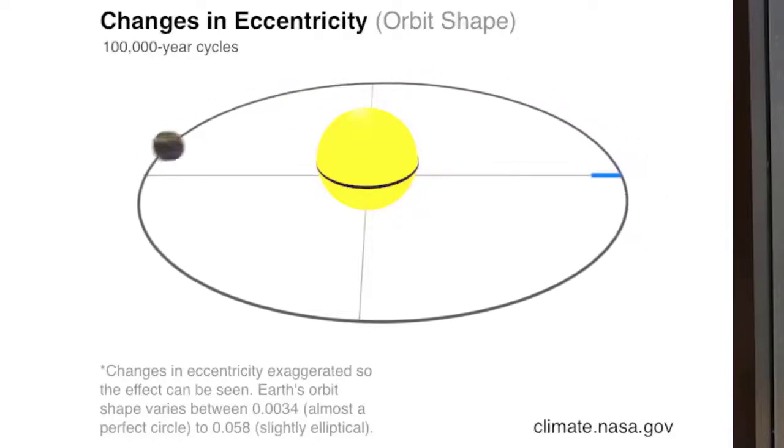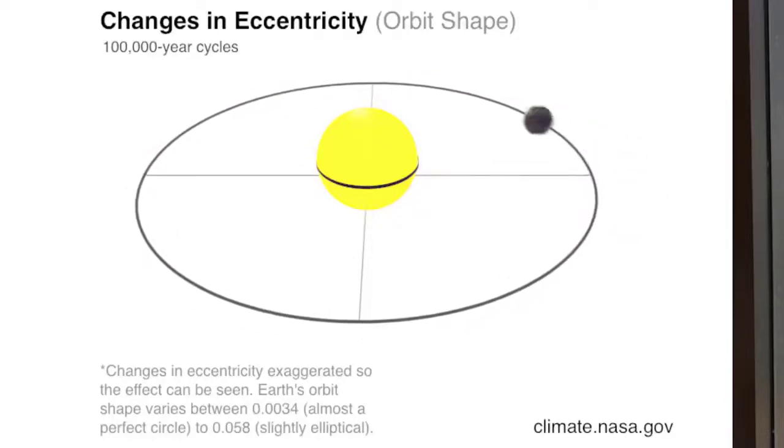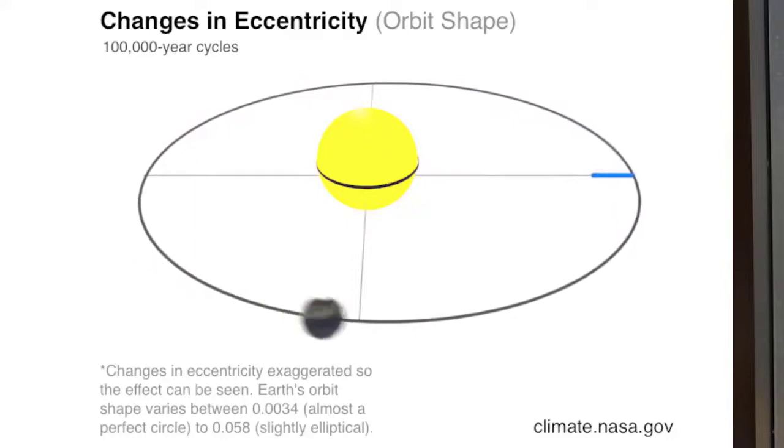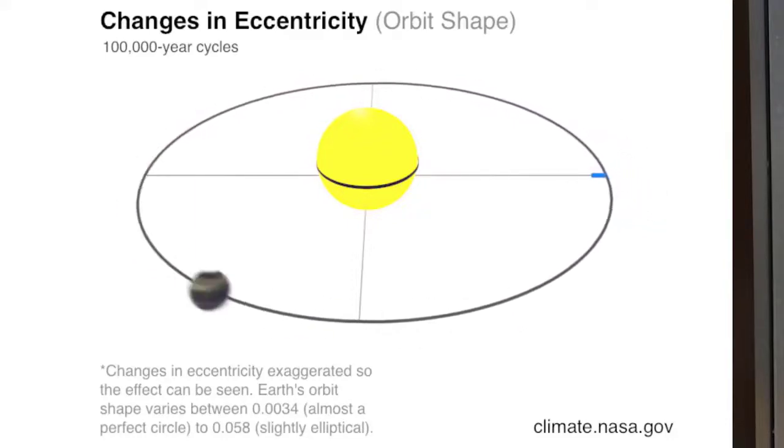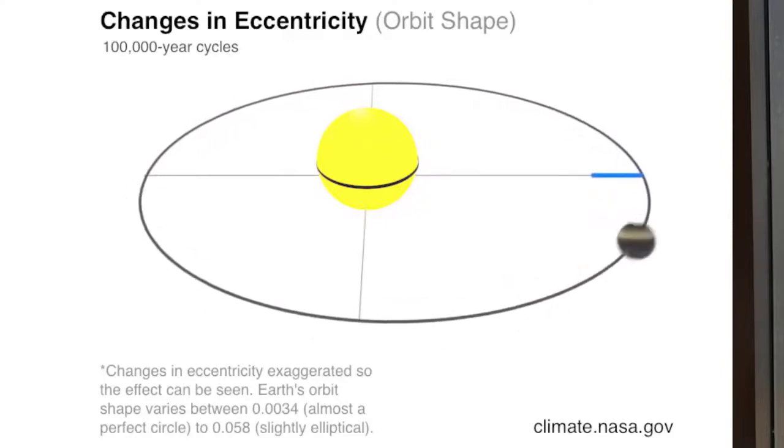This variation occurs due to the gravitational pull of the two largest planets in the Solar System, Saturn and Jupiter. It takes around 100,000 years for the Earth's orbital path to cycle from circular to elliptical and back again.